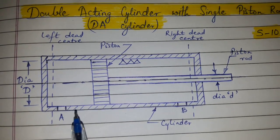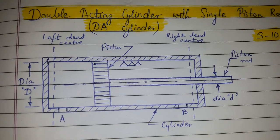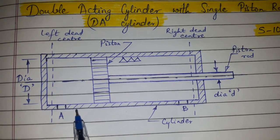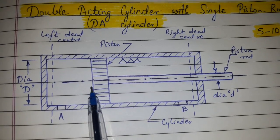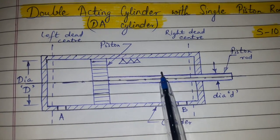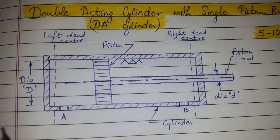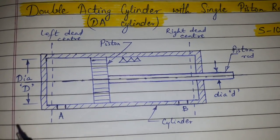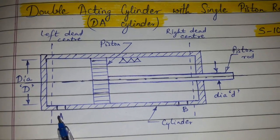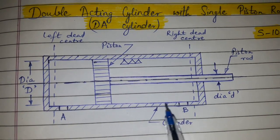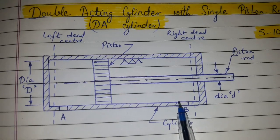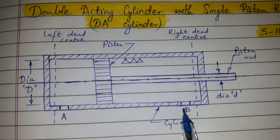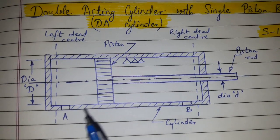There are two ports, A and B. The pressurized oil enters through port A, and due to the pressure force created by the oil, the piston will move towards the right. When the piston reaches the right dead center, flow through port A stops, and now the pressurized oil starts entering into the piston rod side of the cylinder through port B.